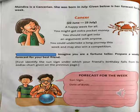Now imagine you are a fortune teller. Prepare a weekly forecast for your best friend. First, identify the sun sign under which your friend's birthday falls from the zodiac chart given on the previous page. Dear students, as you are at home, if you don't know your friend's birthday, you can take the birthdays of your brother, sister, or parents. Now write the forecast for the week: sun sign, date of birth, and just assume what the forecast for the week will be.